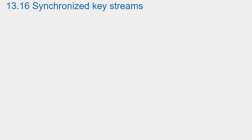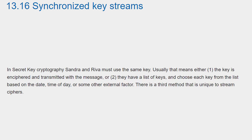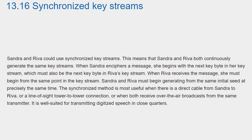Section 13.16: Synchronized key streams. In secret key cryptography, Sandra and Reva must use the same key. Usually that means either: one, the key is enciphered and transmitted with the message; or two, they have a list of keys and choose each key from the list based on the date, time of day, or some other external factor. There is a third method that is unique to stream ciphers: Sandra and Reva could use synchronized key streams.